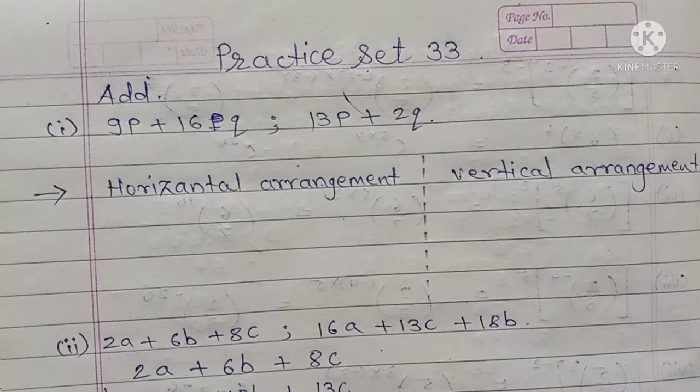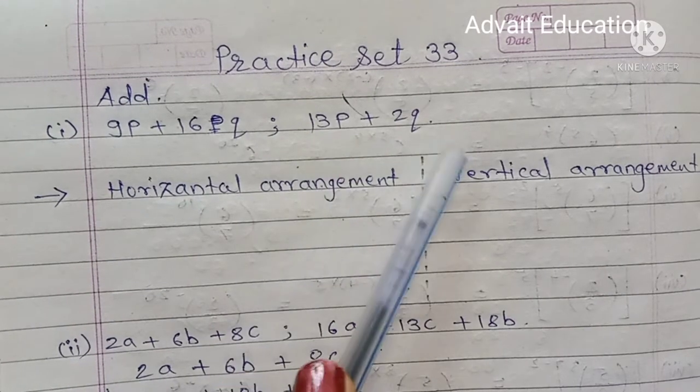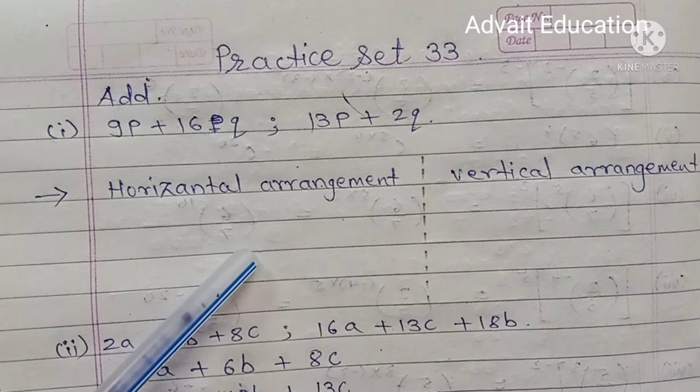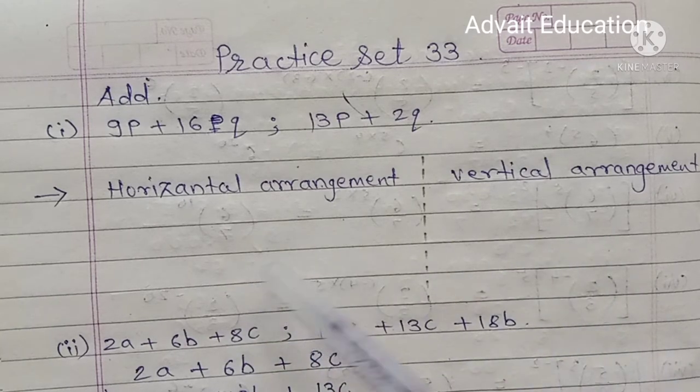First addition: 9P plus 16Q and 13P plus 2Q. See, there are two methods of addition, horizontal arrangement and vertical arrangement. In the first question I am solving in both arrangements, horizontal and vertical.